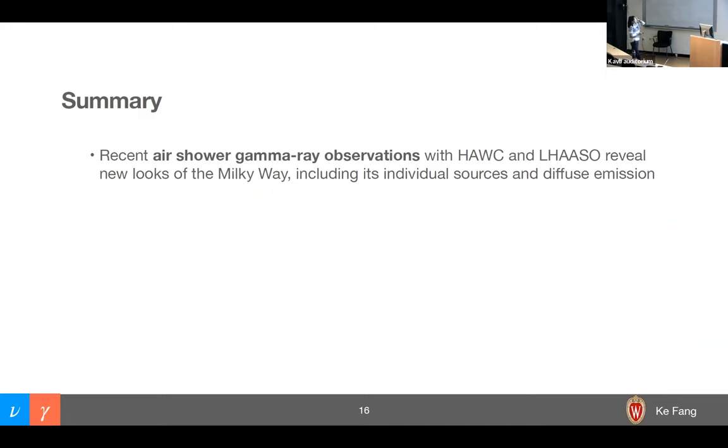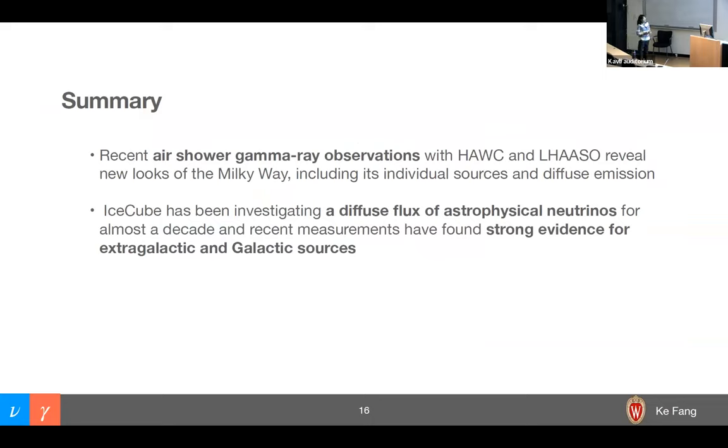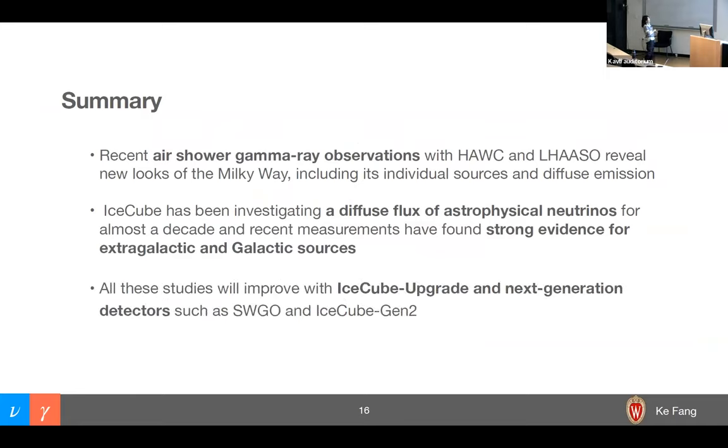That gives me to the summary. So hopefully this is a quick walkthrough of the latest results with the air shower gamma observatories with HAWC and LASSO hitting the highest energy photon wavelengths, photon energies. And then IceCube has established a diffuse flux of astrophysical neutrinos. And even though we have no idea what they are, we do have some interesting facts about these sources, and the basic conclusion is they look very different from the gamma sky. And finally, all of these results will hopefully improve with the existing IceCube upgrade, hopefully coming in the winter of 2025, and also the next generation detectors such as SWGO and IceCube Gen2. Thank you so much.